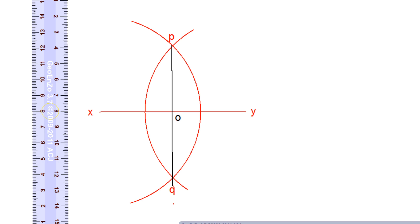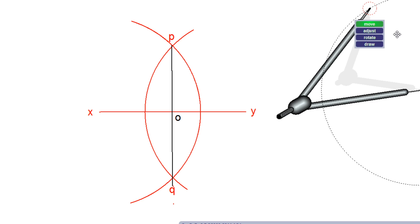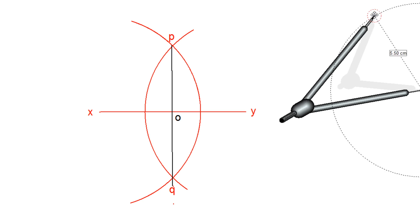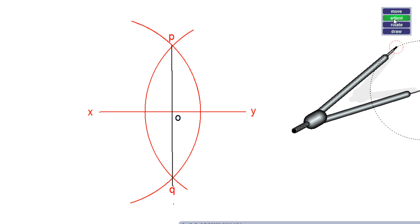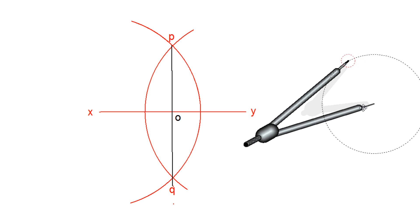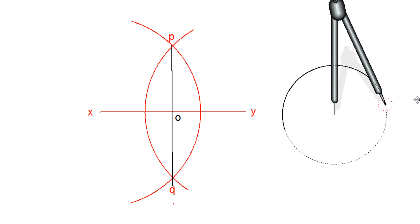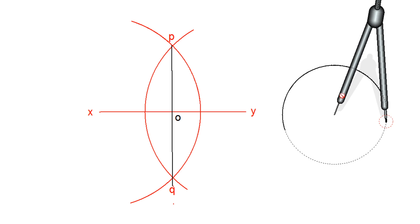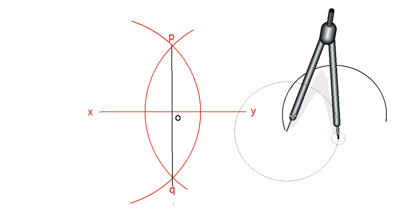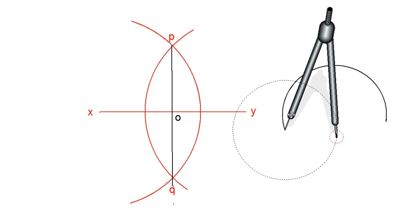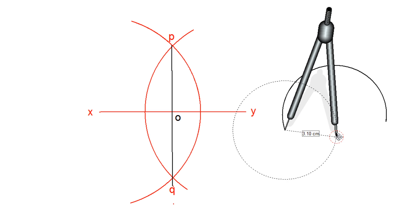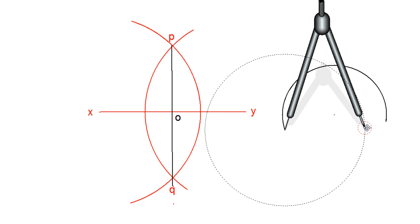Now we'll try to divide an arc into two equal parts. I will take the compass and draw a small arc. Let's say this is the arc, and I want to divide it into two equal parts. Using the same process, bring the compass to both ends of the arc and take a radius a little more than the length of the arc.